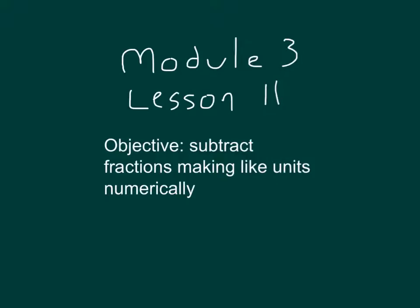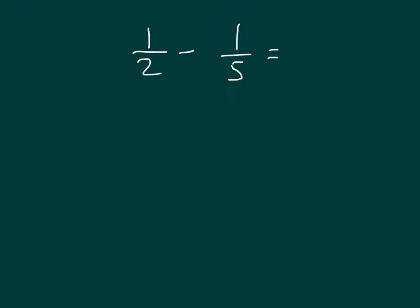Our objective in this lesson is to subtract fractions making like units numerically. Here I have the fraction 1 half minus 1 fifth. You'll notice they're not like units, so let's go ahead and make that common denominator.